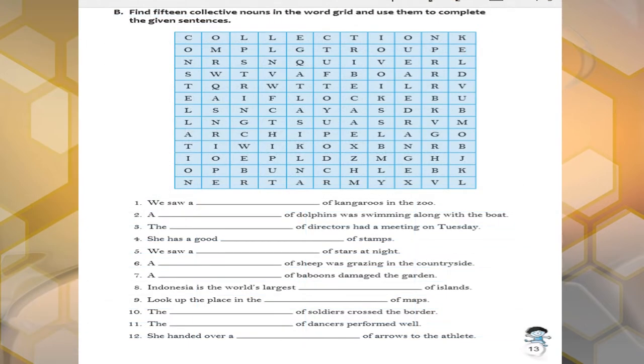And B, you have a words grid and use them to complete this. This is a collective noun. Very common ones are given, well known to you.